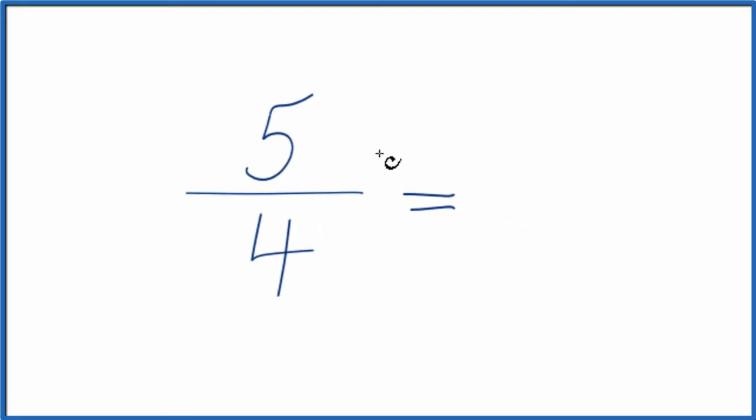To do that, we need to find a common factor, something that goes into 5 and 4. We're looking for the greatest common factor, but the only thing that goes into both 5 and 4 is 1. So if we divide 5 by 1, we get 5; divide 4 by 1, we get 4, and that's what we started with.